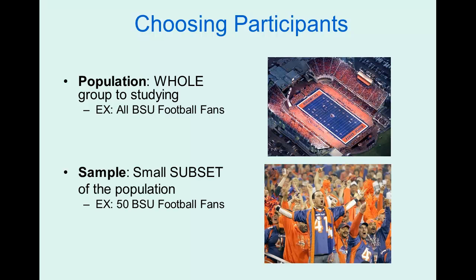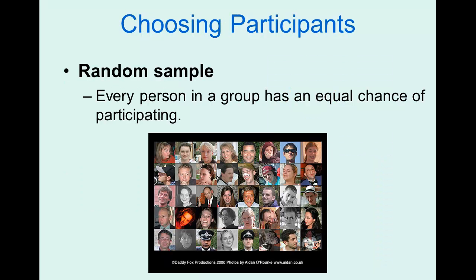So instead, what we oftentimes do in psychology is take a sample — a small subset of the population. Maybe I measure 50 BSU football fans, or maybe 500 or 1,000. The idea is that it's just a small group. What we want to do is draw conclusions from that sample about the population as a whole. In order to do that, the sample needs to be random — meaning every person in the group has an equal chance of participating.